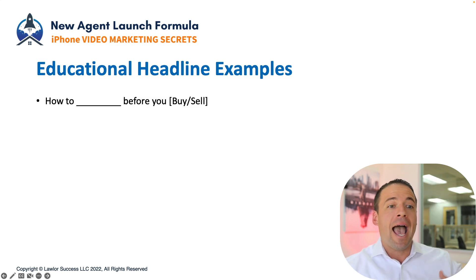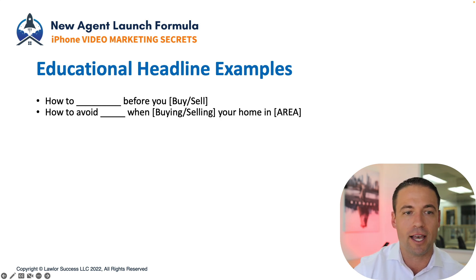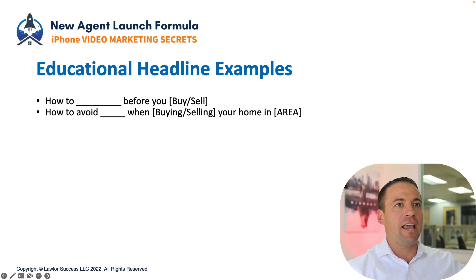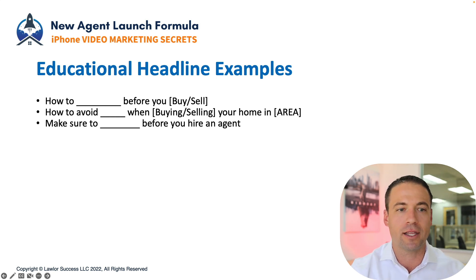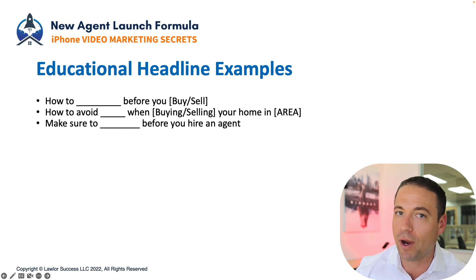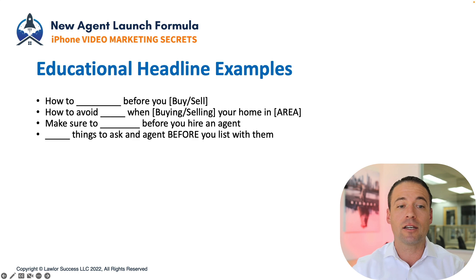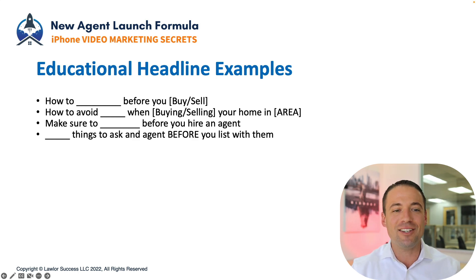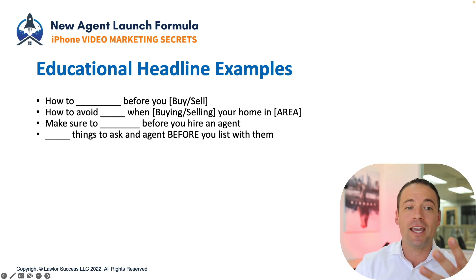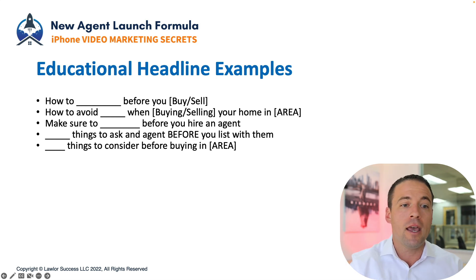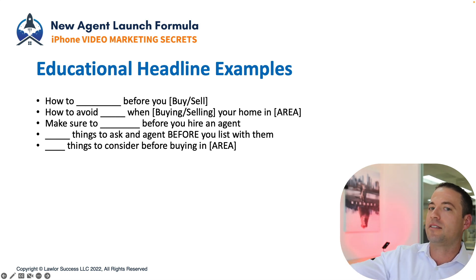Example headlines: 'How to prepare your home for sale before you sell,' 'How to avoid paying for too many repairs when buying a home in Orange County,' 'Make sure you do X before you hire an agent,' 'Five things to ask before you list with an agent,' 'Seven things to consider before buying a home in Dana Point,' '17 things to consider before moving to Tennessee' — lists work great for these.